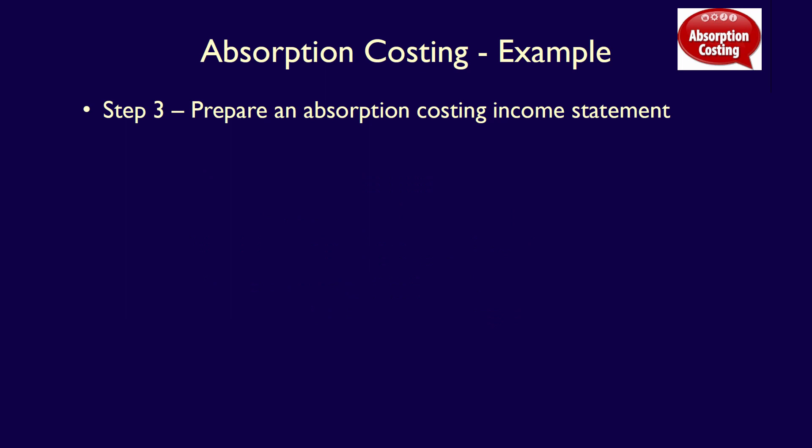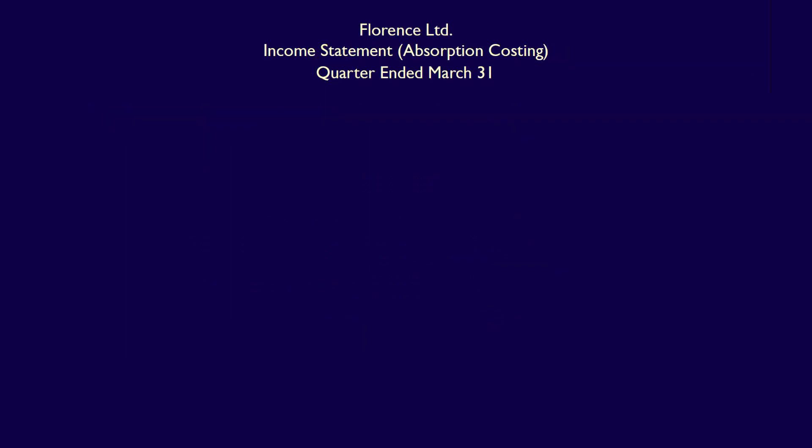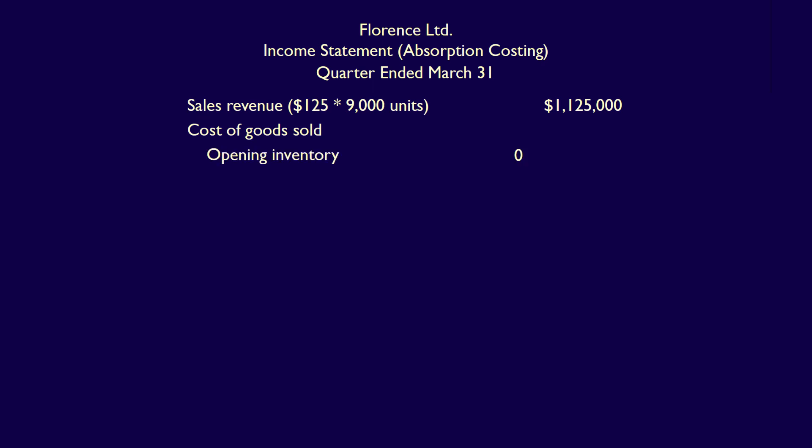Step 3 is to prepare the absorption costing income statement. We'll start with the company name, the name of the statement, and the date: Florence Limited, Income Statement, Absorption Costing, for the quarter ended March 31st. We then calculate sales revenue as $125 per unit selling price multiplied by the 9,000 units sold, which equals $1,125,000. We then calculate the cost of goods sold, starting with the value of opening inventory, which we know is zero.